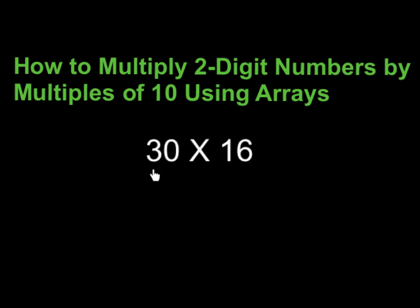Using the example 30 times 16, 30 is the two-digit number that is also a multiple of 10, because 3 times 10 is 30. 16 is not a multiple of 10, but as long as one of our two-digit numbers is, then we can use this method to solve them easily.